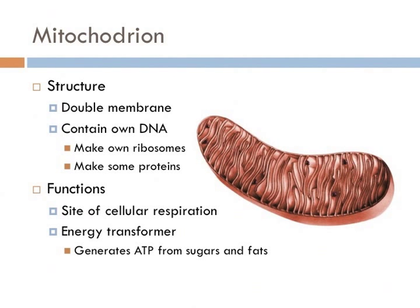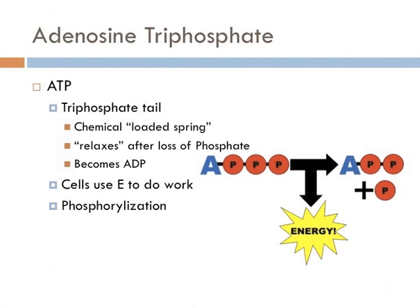ATP is life's universal energy currency. Adenosine triphosphate, commonly known as ATP, is like a chemical spring that gets loaded and moves around a cell and can be split apart producing energy. ATP is split into ADP, which is now relaxed and has a phosphate molecule. This is the energy that all cells on Earth use to do work, and it is known as phosphorylation.